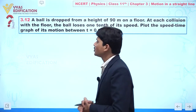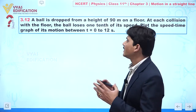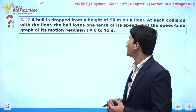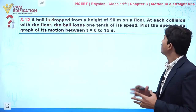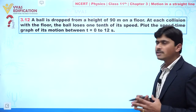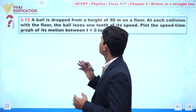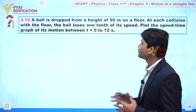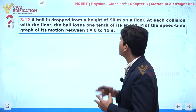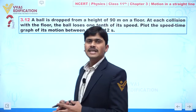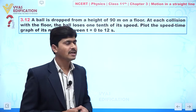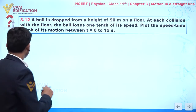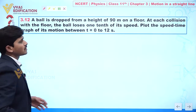Now we are going to discuss question number 3.12. In this question, a ball is dropped from a height of 90 meters on a floor. At each collision with the floor, the ball loses one tenth of its speed. Plot the speed-time graph of its motion between t equal to 0 to t equal to 12 seconds.